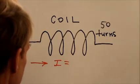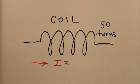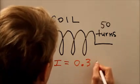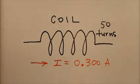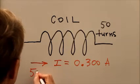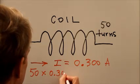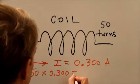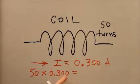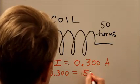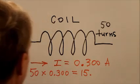Well, 300 milliamperes is 300 one-thousandths of an ampere or 0.300 amperes. So 50 times 0.300 equals 15.